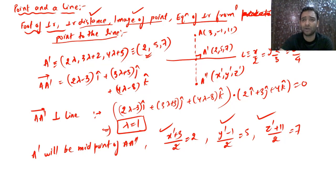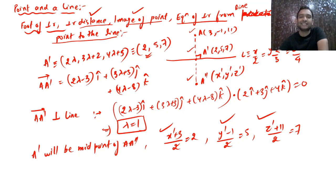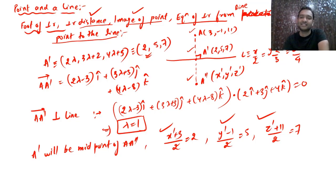For the equation of the perpendicular line from the point to the line, we already have point A and foot A'. Since we have two points, we can directly write the equation of this perpendicular line using the two-point form.